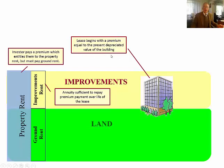The lease begins with a premium paid by the investor — this is the person who's going to become the lessee. The lessee, the investor, is going to pay a premium which equals the present depreciated value of the building, meaning they've paid a price equal to the value of the building at this point. In return for that, they get the right to earn all of the property rent. However, they don't get to keep it all — they have to pay the ground rent out. By simple subtraction, the net income for the investor is the property rent less the ground rent. And the ground rent is the property rent less the improvements rent. Very simple arithmetic.